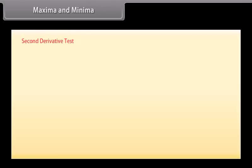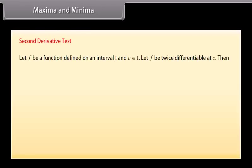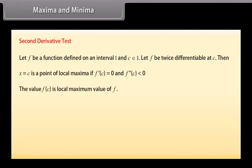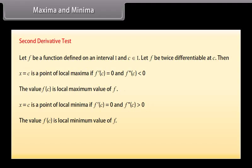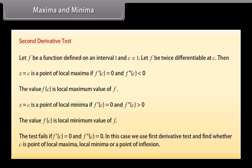Maxima and minima — Second derivative test. Let f be a function defined on an interval i and c belongs to i, and let f be twice differentiable at c. Then x equals c is a point of local maxima if f dash of c equals 0 and f double dash of c is less than 0; the value f(c) is the local maximum value. x equals c is a point of local minima if f dash of c equals 0 and f double dash of c is greater than 0; the value f(c) is the local minimum value. The test fails if f dash of c equals 0 and f double dash of c equals 0; in this case, use the first derivative test.